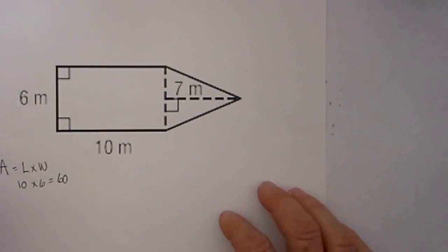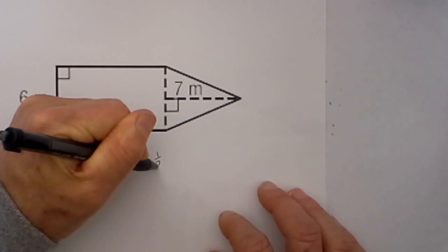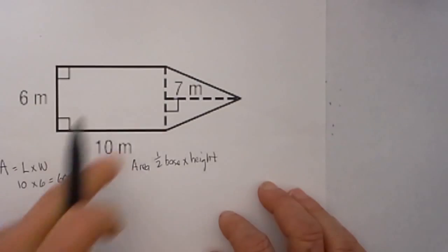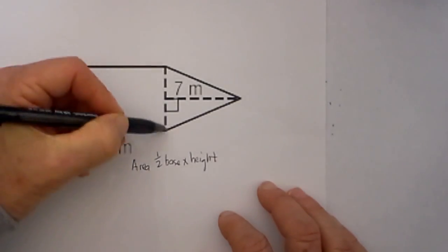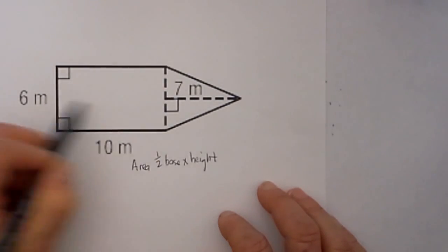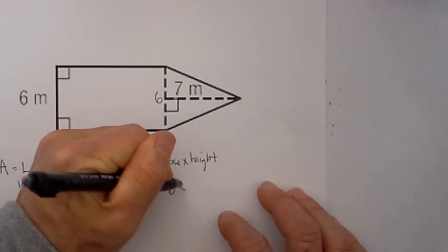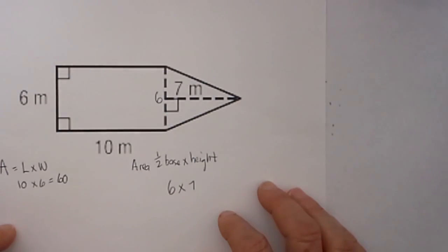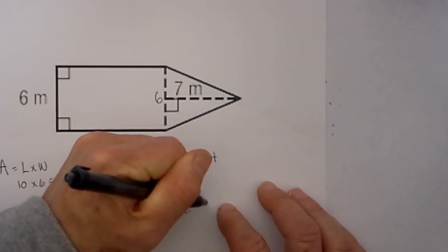Then next we have a triangle, and the area formula for a triangle is equal to one-half base times the height. Well, in this particular triangle we have a base of 6 meters because we know that these two are the same, so I will move the 6 over to here. So we have a base of 6 and a height. We know the triangle, the height is, because you have a right triangle, is 7 meters. So 6 times 7 is 42, and then one-half of that is equal to 21.